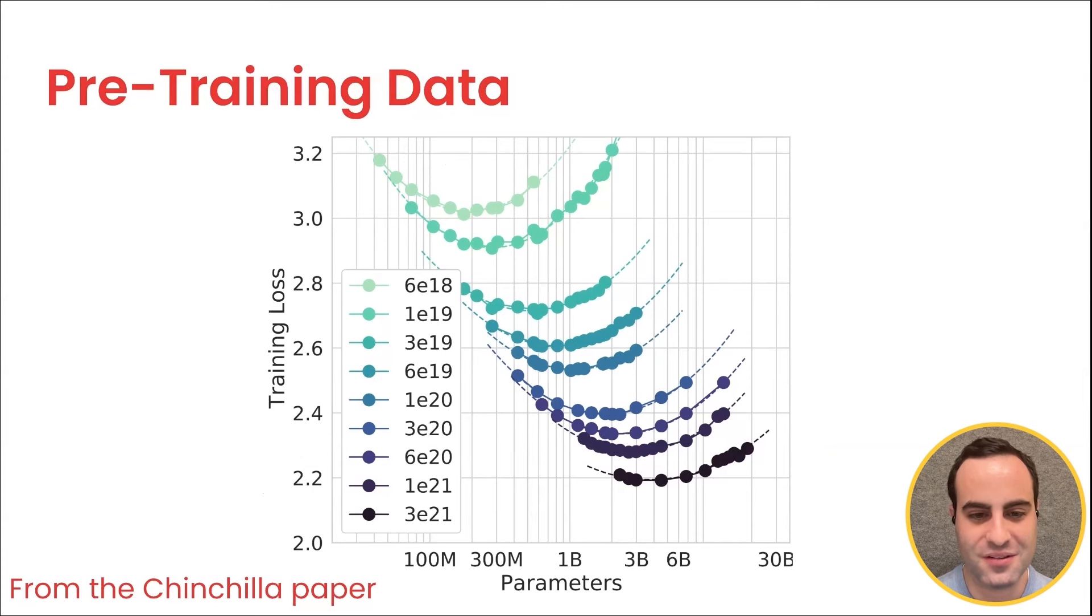So what I want you to do is take a look, for example, at that point that says 3B or 3 billion parameters on the x-axis, and trace your way upwards. Look vertically upwards and you'll see how for that same model size you can get a lot of different losses, anywhere from a very high loss to a very low loss. The difference here is how much budget you spent.